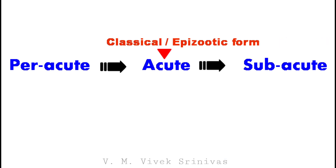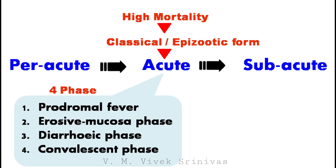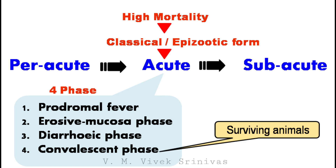The classical acute or epizootic form shows high mortality and encounters 4 different phases: the prodromal phase, erosive mucosal phase, diarrheic phase, and in surviving animals, the convalescent phase.